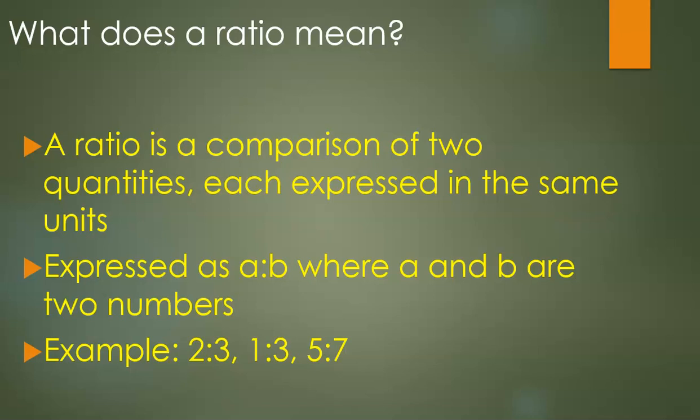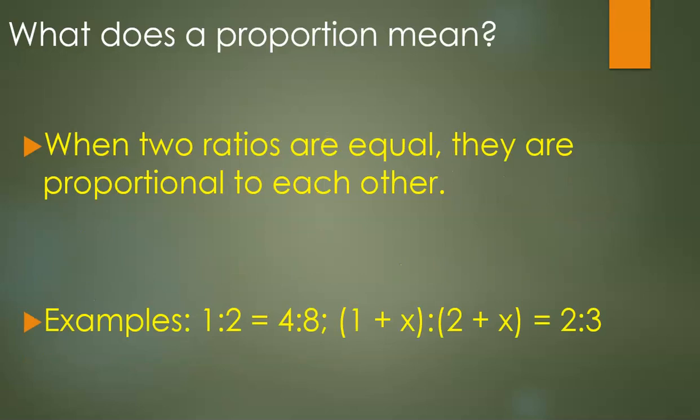Next up is what does a proportion mean? When two ratios are equal, they are said to be proportional to each other. For example, 1:2 equals 4:8, because 1:2 is the same as (1×4):(2×4), which is 4:8.